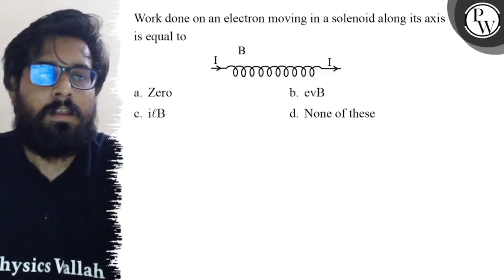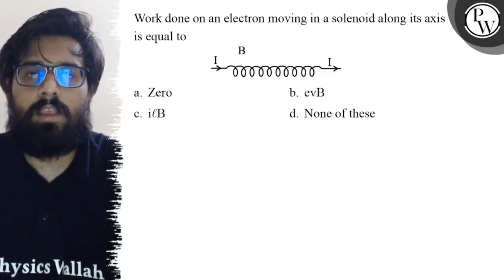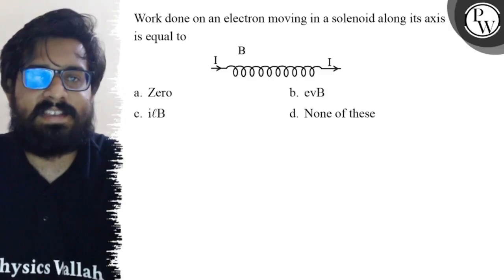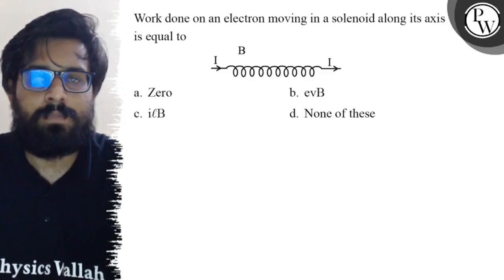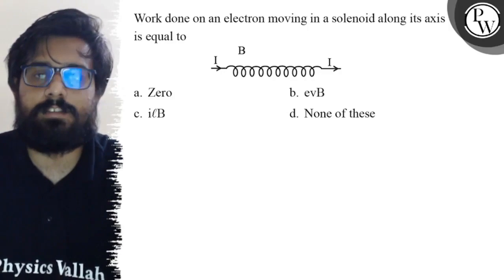Hello, so let's see the question: work done on an electron moving in a solenoid along its axis is equal to... Your first option is zero, second option is evB, your third option is ilB, and your fourth option is none of these.